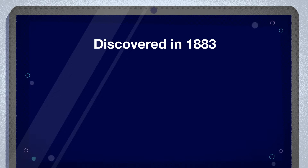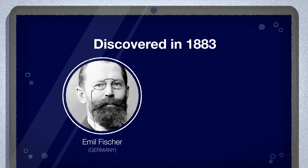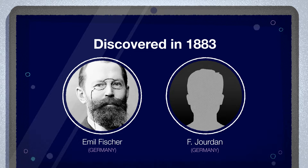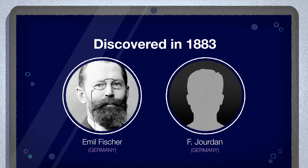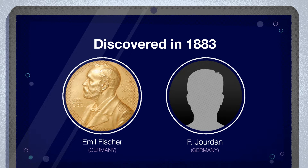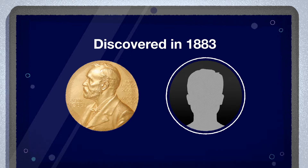The reaction was discovered in 1883 by Emile Fischer and F. Jordan, and it is considered the most important method for preparing substituted indoles. Later in 1902, Emile Fischer won the Nobel Prize in Chemistry for his work on sugar and purine syntheses.